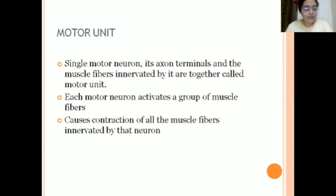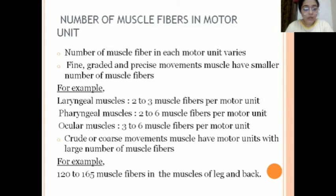A motor unit is a single neuron together with the muscle fibers innervated by its axon. Each motor unit activates a particular group of muscle fibers, causing contraction. The number of muscle fibers in a motor unit varies depending on the area and function. For fine, precise movements, there are fewer muscle fibers — for example, laryngeal muscle has 2–3, pharyngeal muscle has 2–6, and ocular muscle has 3–6 fibers per motor unit.